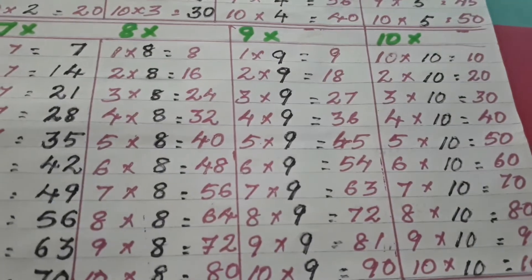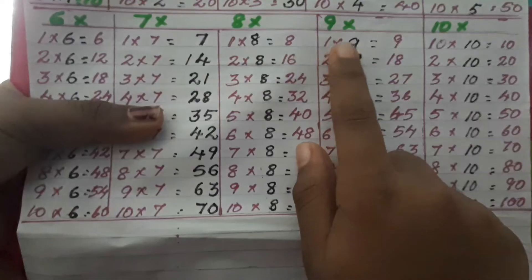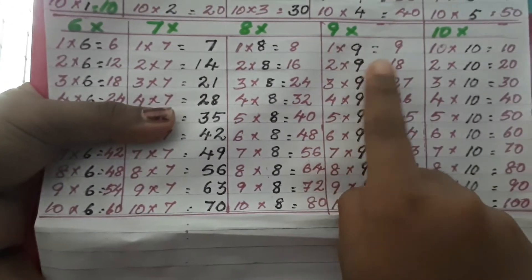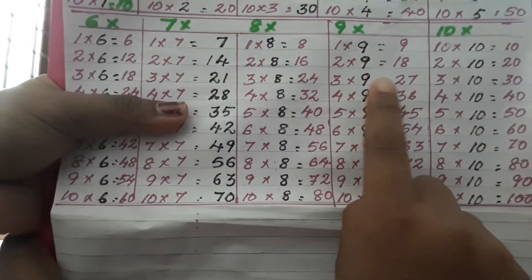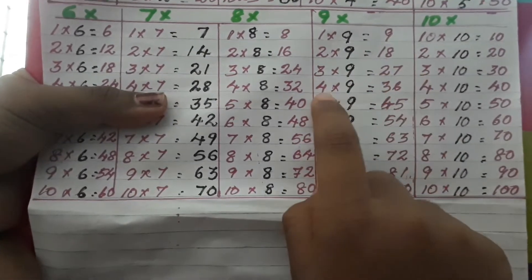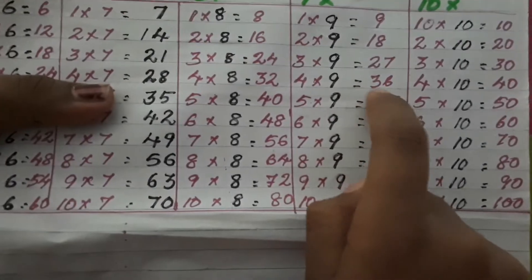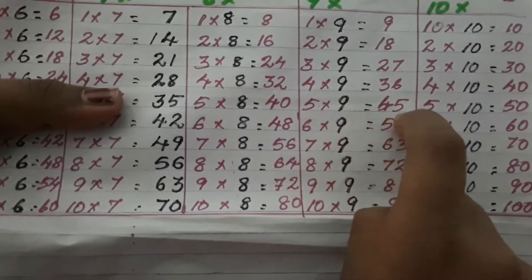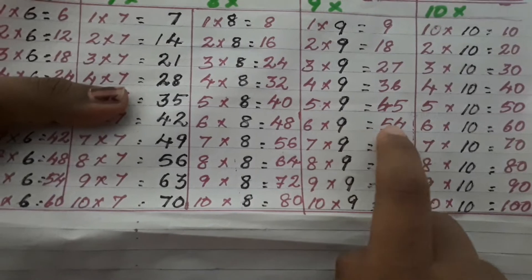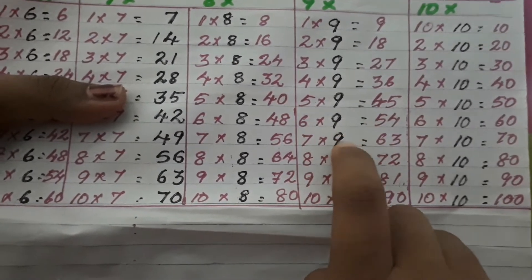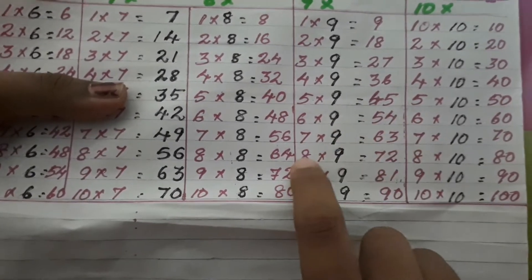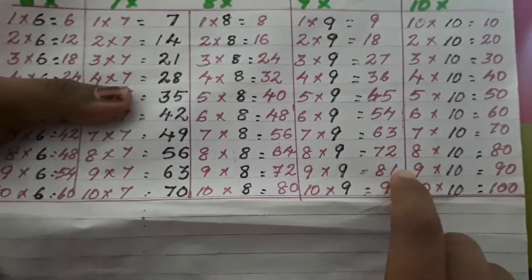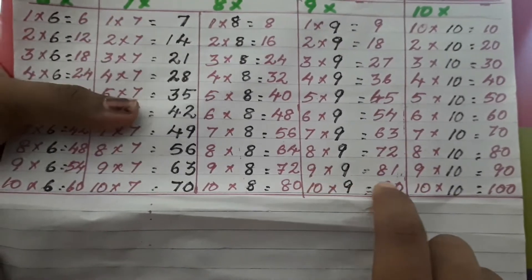Now, let's see table of 9. 1 nine is 9. 2 nines are 18. 3 nines are 27. 4 nines are 36. 5 nines are 45. 6 nines are 54. 7 nines are 63. 8 nines are 72. 9 nines are 81. 10 nines are 90.